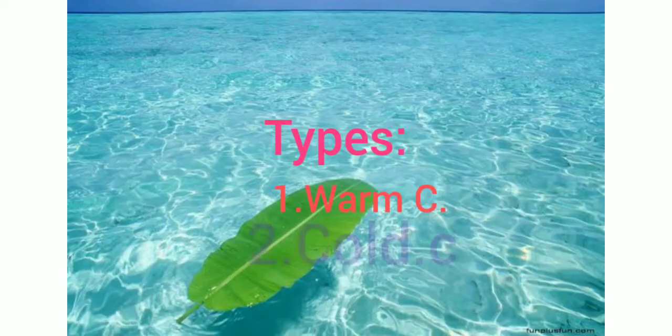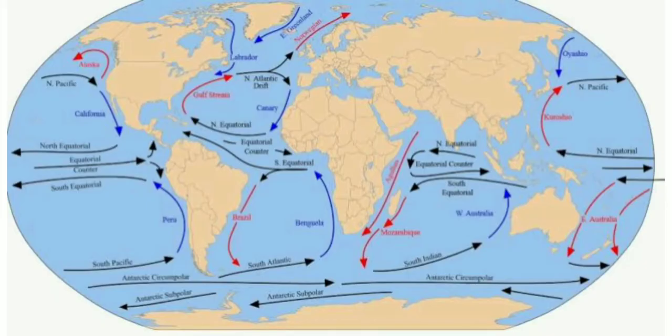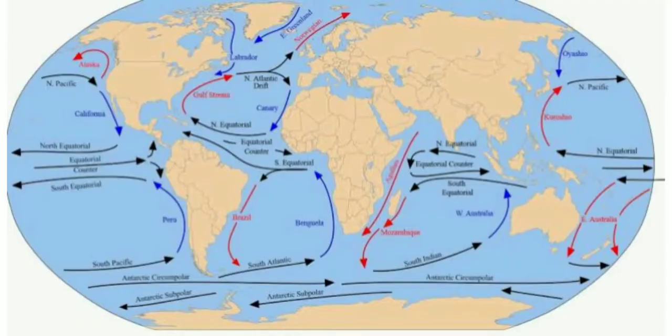There are two types of ocean currents: warm currents and cold currents. Warm currents are those which flow from the warmer equatorial zone to the cooler polar region, having a higher surface temperature. Cold currents are those which flow from the polar region to the equatorial region, having a low surface temperature.